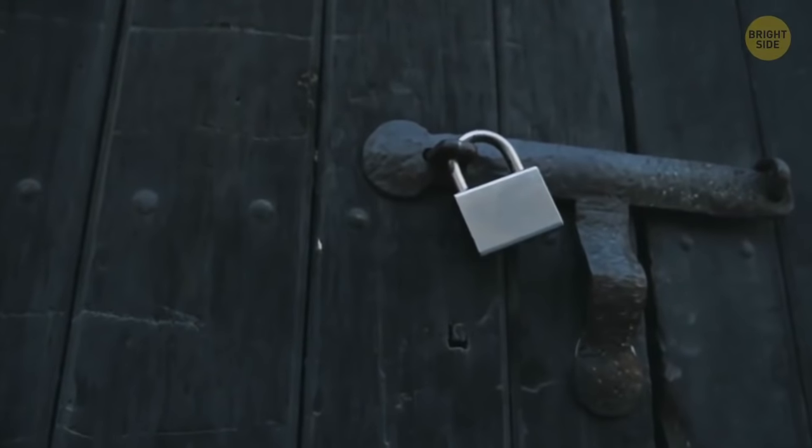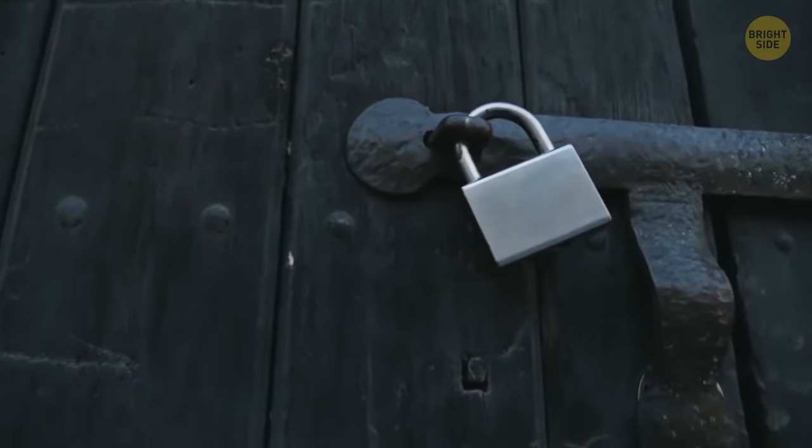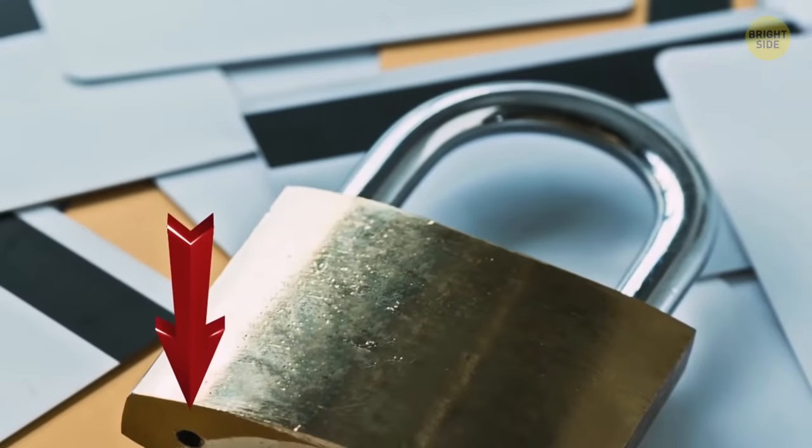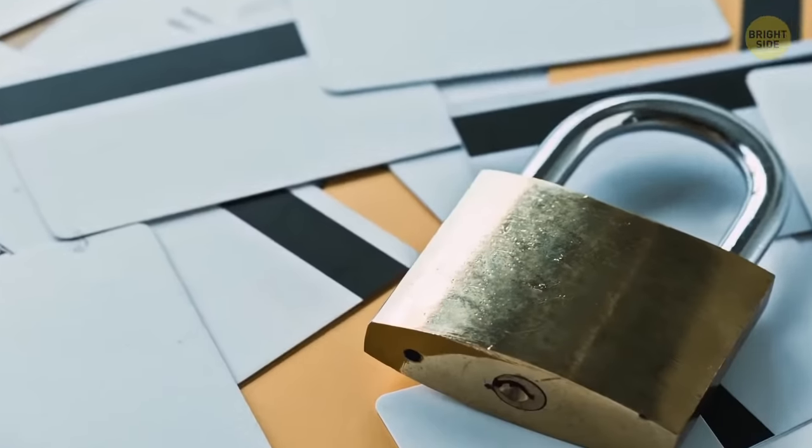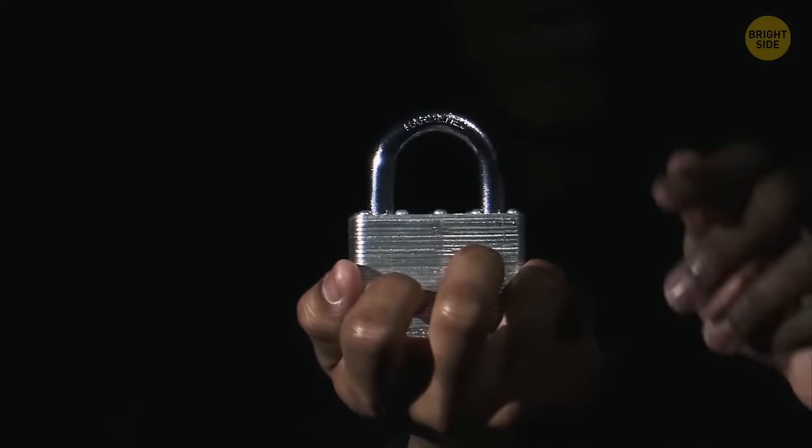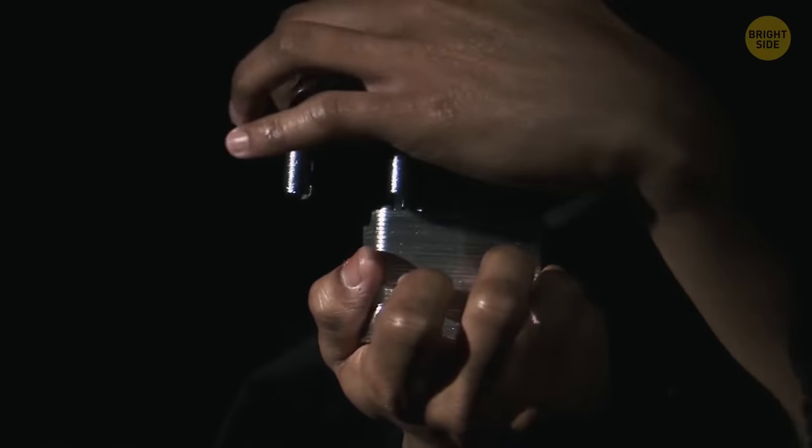Padlocks that are used outside quickly get out of order because of rain. See this little hole in the bottom? It's made for pouring engine oil inside. Do this and the key will again turn in the lock without any difficulty.